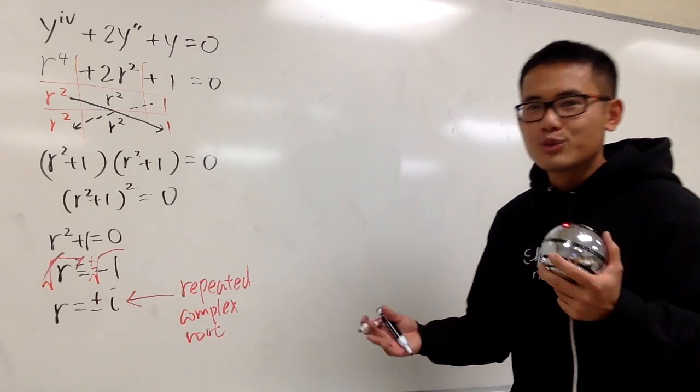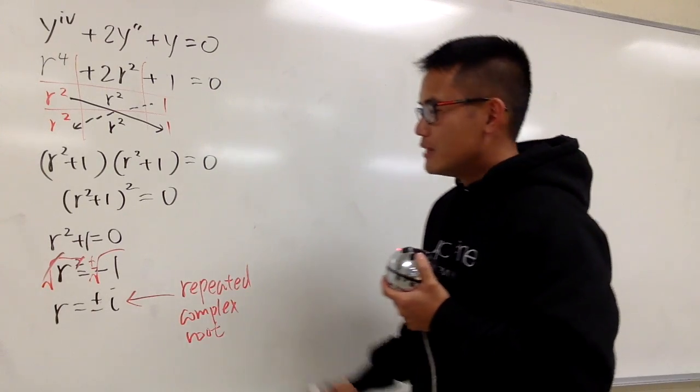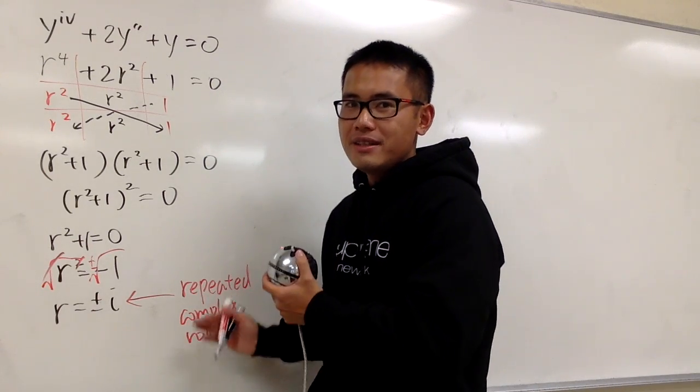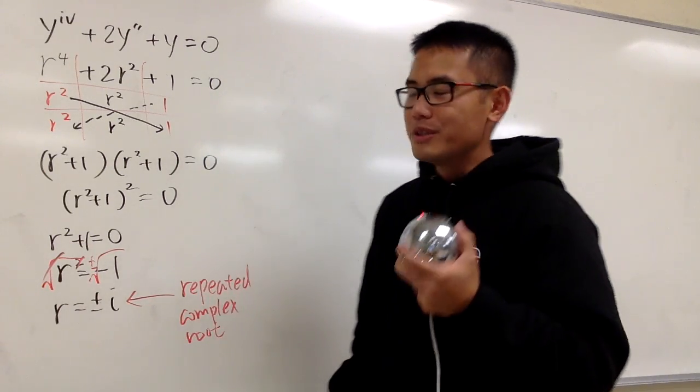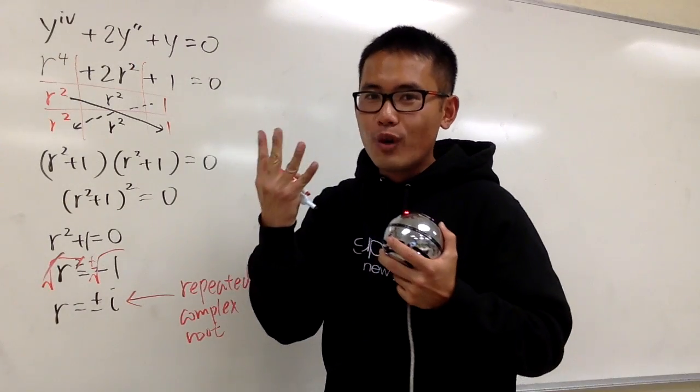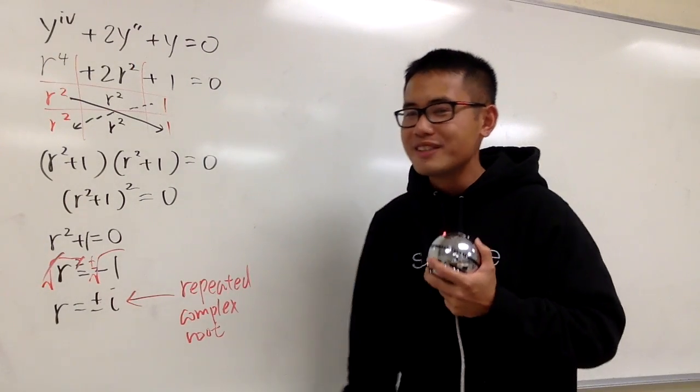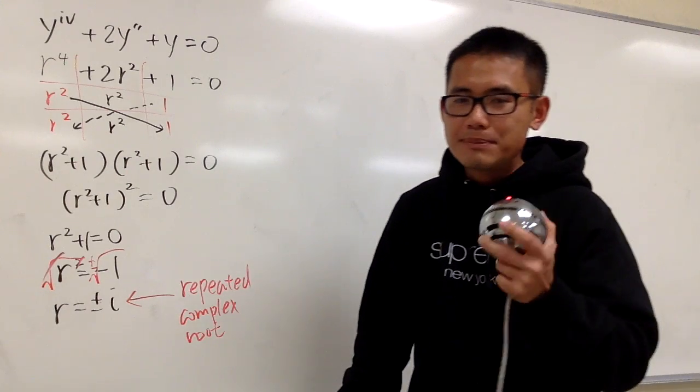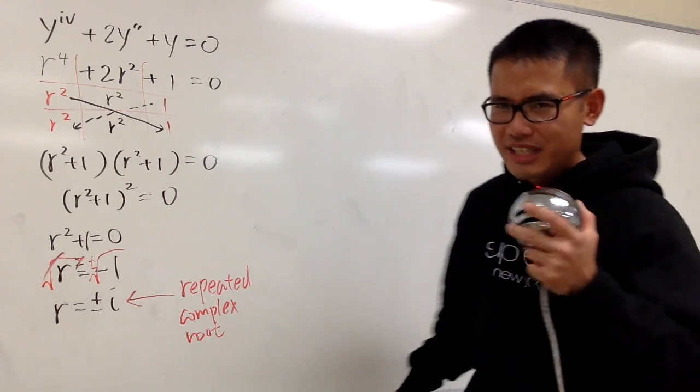And this is how you're going to construct your answer. First of all, just ignore the fact that it's being repeated, and another thing that you should know is, because this is the fourth order, you should expect to have four constants. Keep that in mind.